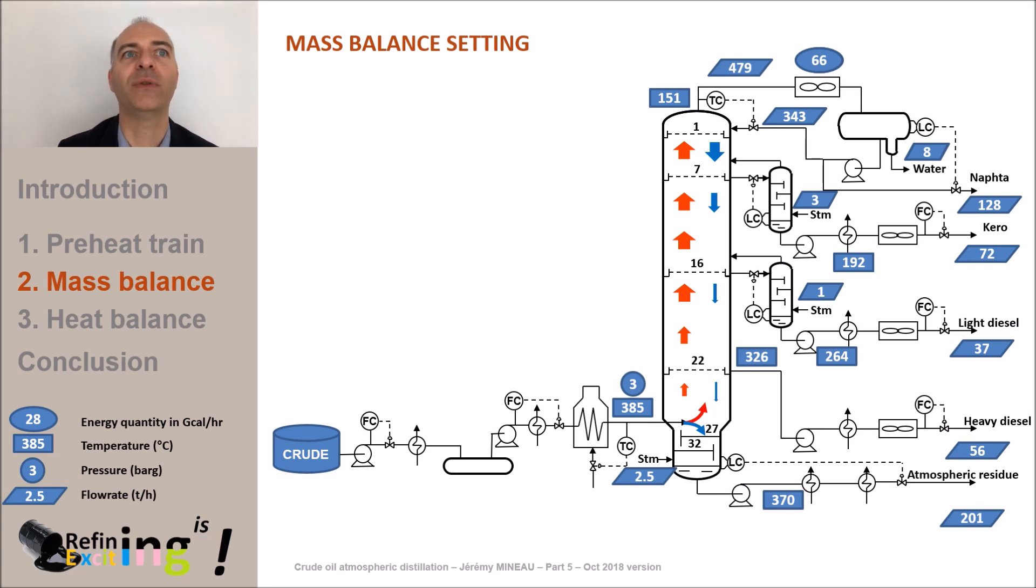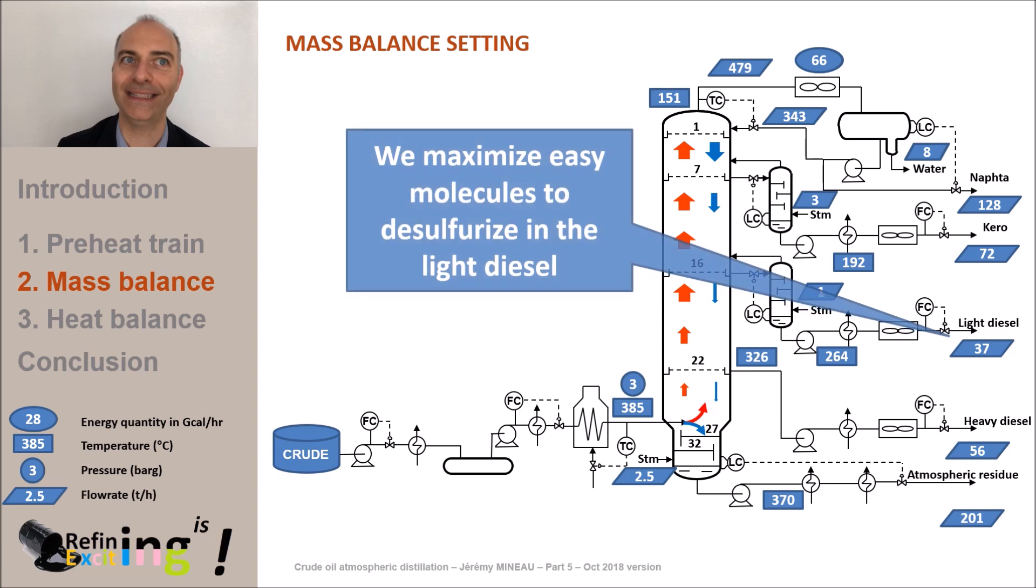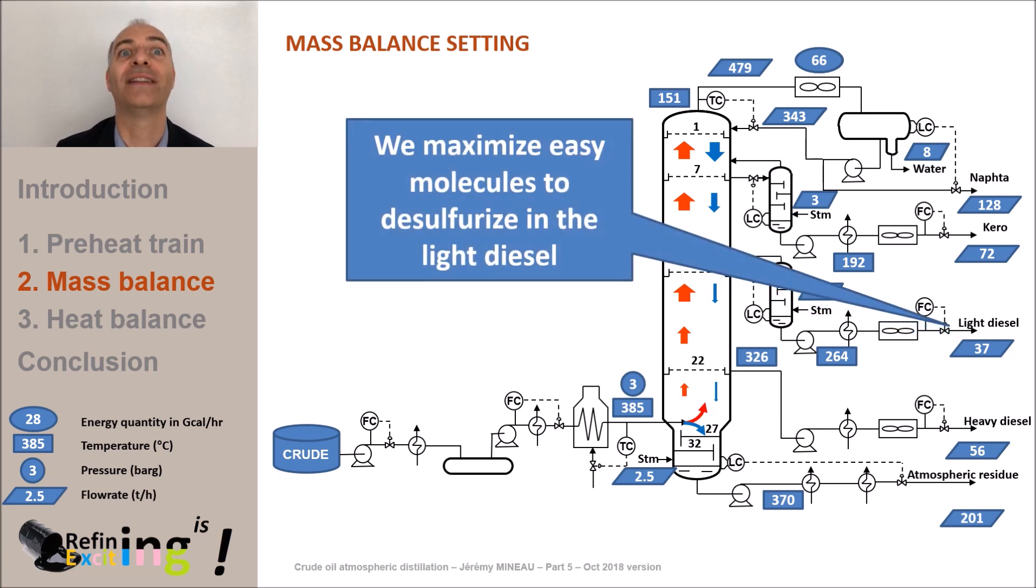It is known that the so-called easy molecules to desulphorize are the boiling point of about 300 degrees C. Above 300 degrees C, sulfur molecules are more difficult to desulphorize. So, to make it simple, cutting at 300 degrees C means routing molecules that are easy to desulphorize in light diesel and molecules that are difficult to desulphorize in heavy diesel.